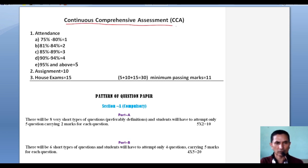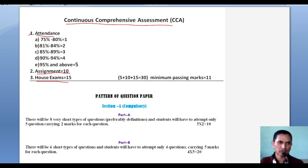Now let us discuss the CCA components. The main parts are: First is Attendance, Second is Assignment, and Third is House Examination.